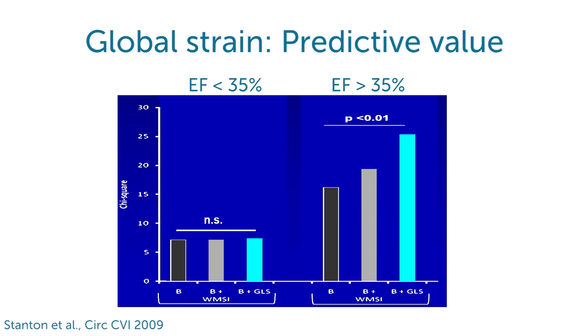If you look at patients with an ejection fraction above 35%, then adding global longitudinal strain gives you an added predictive value. This is probably because it's very difficult to recognize subtle changes of left ventricular function by just measuring ejection fraction. But if you do a global longitudinal strain measurement, this is much clearer because it's a more robust and reliable measurement.